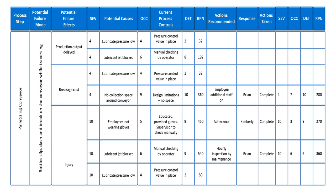Always remember that when you build an FMEA it's like a tree. For a given failure mode you might have multiple effects — effects on production, manufacturing aspects such as quality, delivery, and safety. It could also have impact on the internal customer, that is the next stage of production, since the conveyor is taking items from your shop to another shop. It can also have impact on the end customers, so evaluate the impact from all those stakeholders.